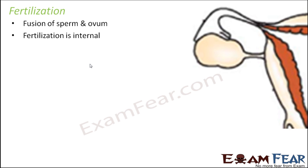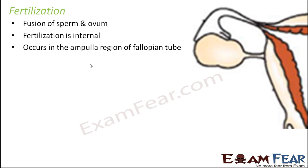In the case of human beings, fertilization is internal because this fusion takes place inside the body — inside the female body. Whereas there are certain animals where fertilization is external: both the male and female gametes are released outside their body and then fuse outside, so that is external fertilization.